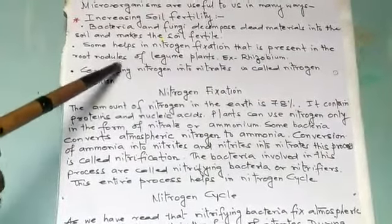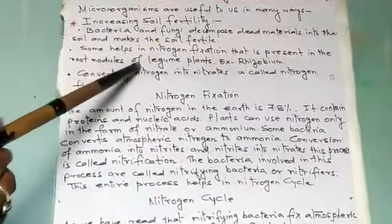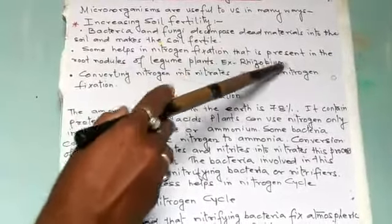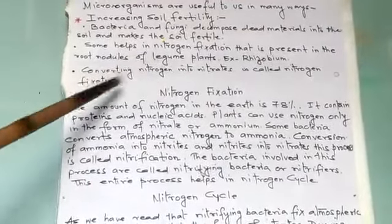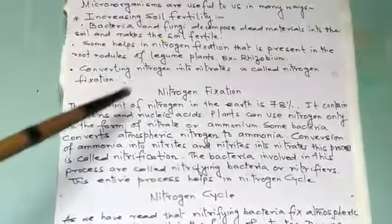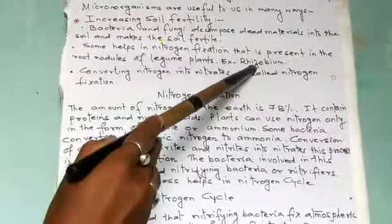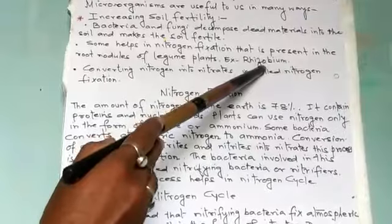Second, some bacteria and fungi help in nitrogen fixation. This nitrogen fixation is present in the root nodules of legume plants. An example of such bacteria is Rhizobium.